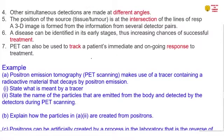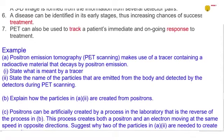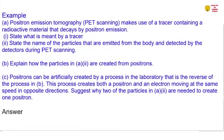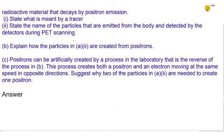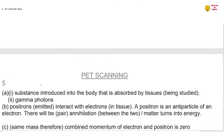Now we're going to look at an example. This will be our last example before I end this video. Positron emission tomography makes use of a tracer containing a radioactive material that decays by positron emission. State what is meant by a tracer. So as we have said, that a tracer is a substance that is introduced into the body that is absorbed by tissues that are being studied.